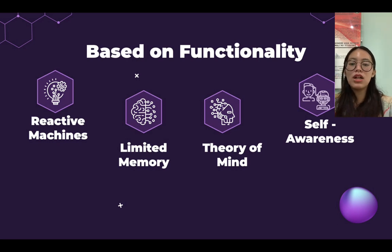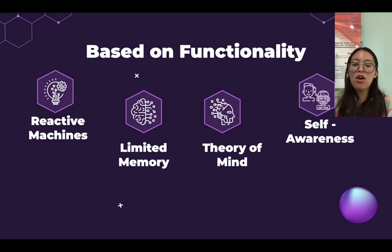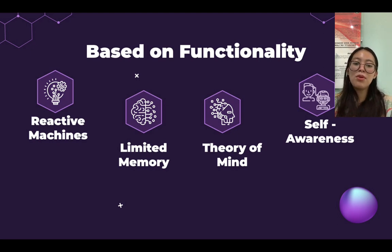The second one is limited memory. Limited memory machines can store past experiences or some data for a short period of time, and can use stored data for a limited time period only. Self-driving cars are one of the best examples of limited memory systems. These cars can store the recent speed of nearby cars, the distance of other cars, speed limits, and other information to navigate the road.